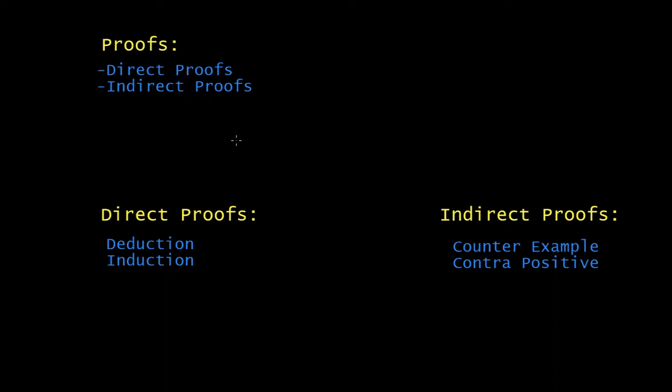There are two types of proofs: direct proofs and indirect proofs. Direct proofs include proof by deduction and proof by induction. Indirect proofs include counter-example and contra-positive. These are the ones you need to know for exams.